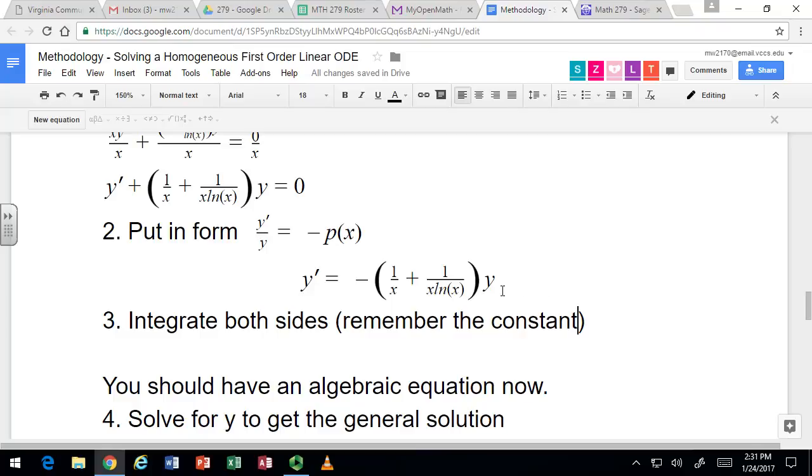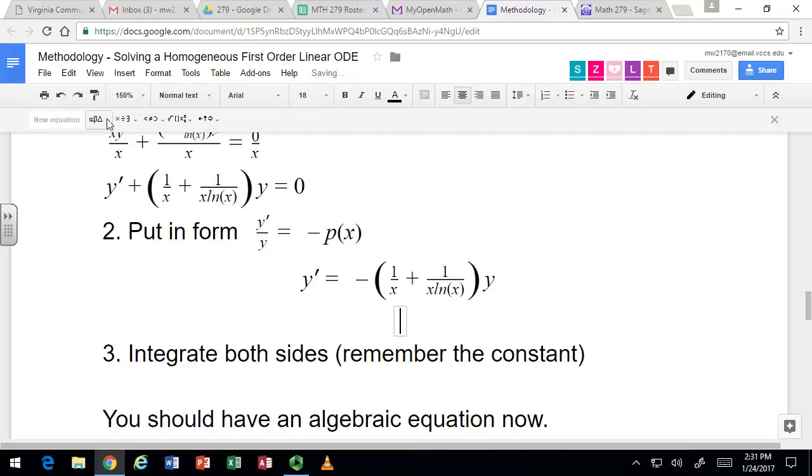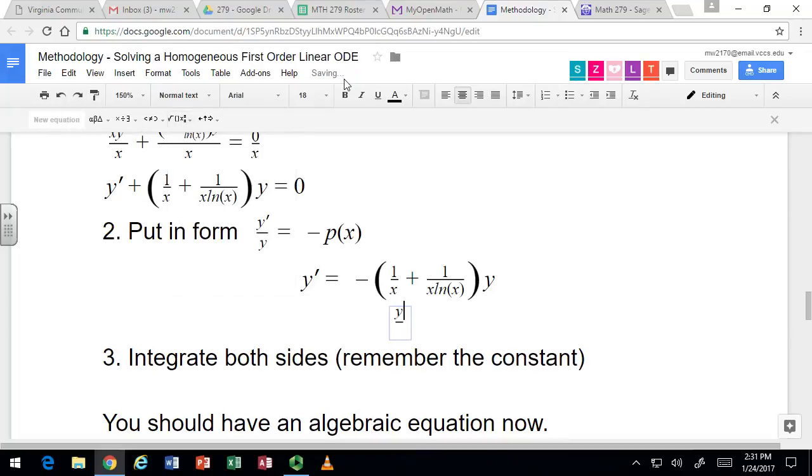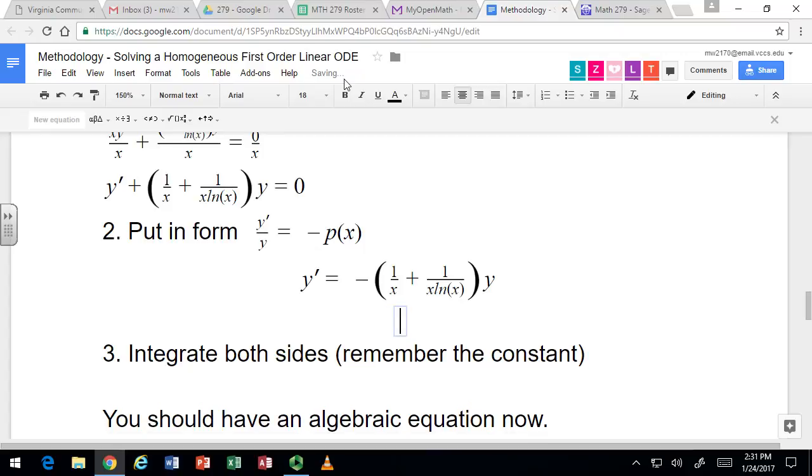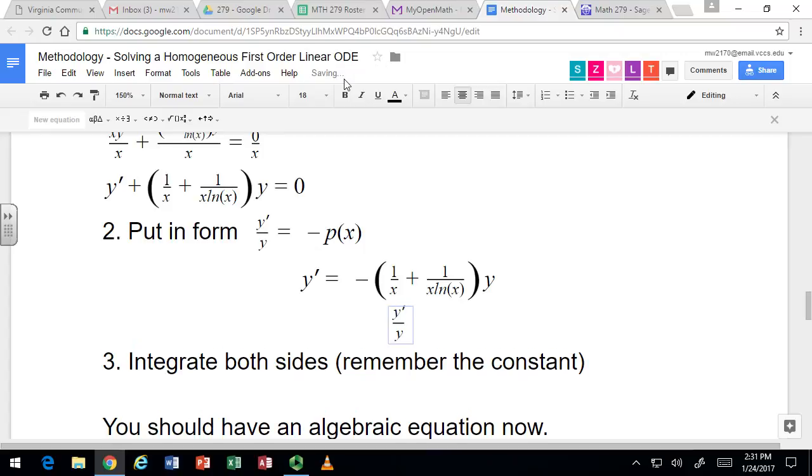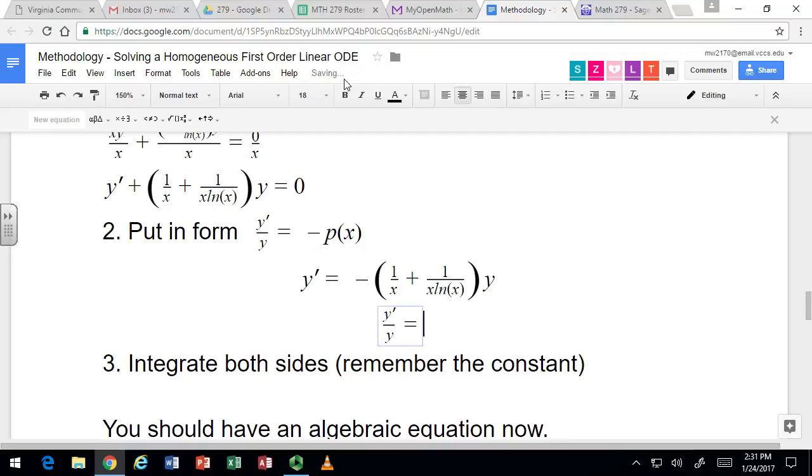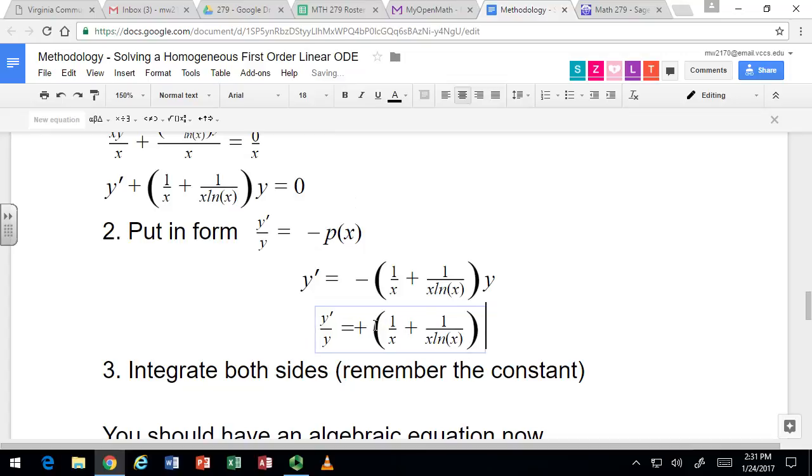So, it's now in that form. No, it's not. We've got that on the other side. We now need to divide by y to get it in that form. So we've got y prime over y equals that. And there's the same p(x) function we already saw earlier, but we now have it as negative, and we have it on the right-hand side. Now the fun begins. We get to integrate that right-hand side.